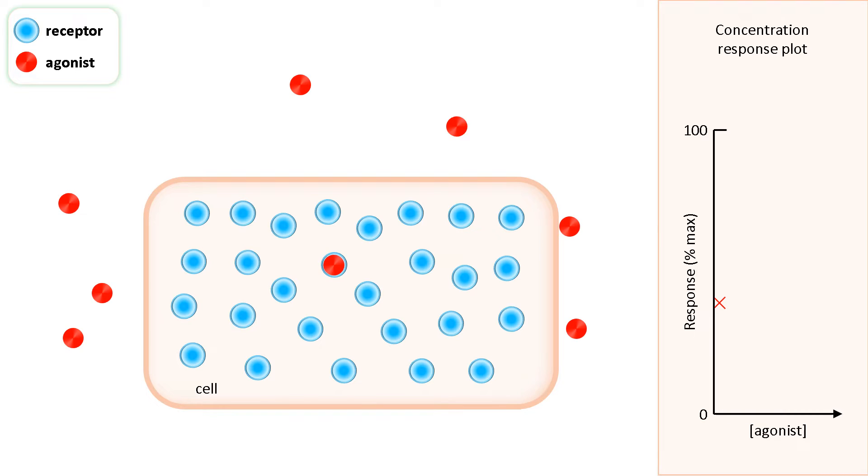Now we double the concentration of agonist at the receptors, and more molecules bind to the receptors. This gives a larger response which is plotted on the graph.